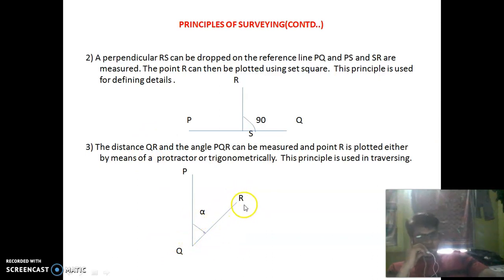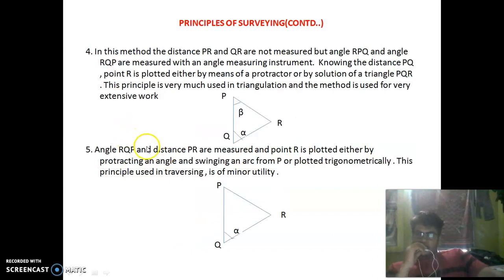Next, fourth method: in this method the distances PR and QR are not measured but angle RPQ, that means angle beta, and angle RQP are measured with an angle measuring instrument.